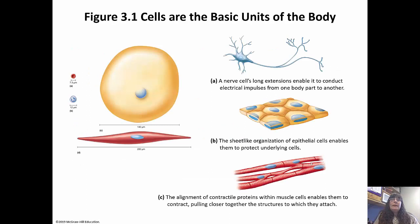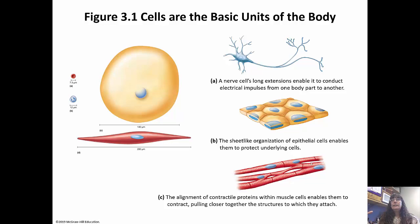Here are some examples of cells. We have a nerve cell, and nerve cells have very long extensions called axons. They have to have these long extensions because their function is to conduct electrical impulses from one part of the body to another. Those axons allow the neurons to actually transmit those impulses. On the other hand, epithelial cells are arranged in a flat sheet, so that helps them protect anything beneath them.